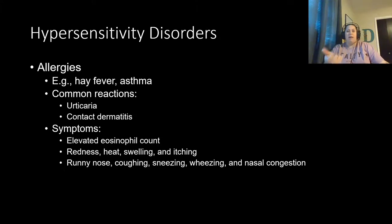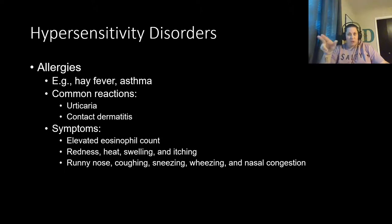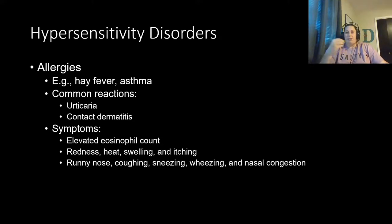Allergies can be very bothersome or life-threatening, especially when the respiratory system is involved. There are four types of hypersensitivity: Type 1 (hay fever and asthma), Type 2 (transfusion reaction), Type 3 (autoimmune issues like lupus and rheumatoid arthritis), and Type 4 (contact dermatitis — which is delayed). Let's look more closely at Type 1, starting with hay fever.